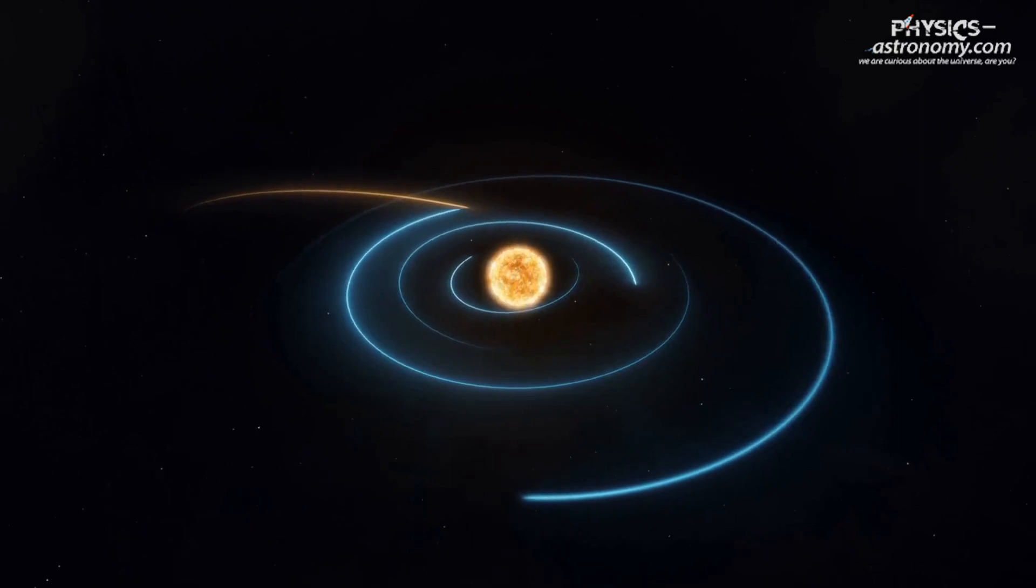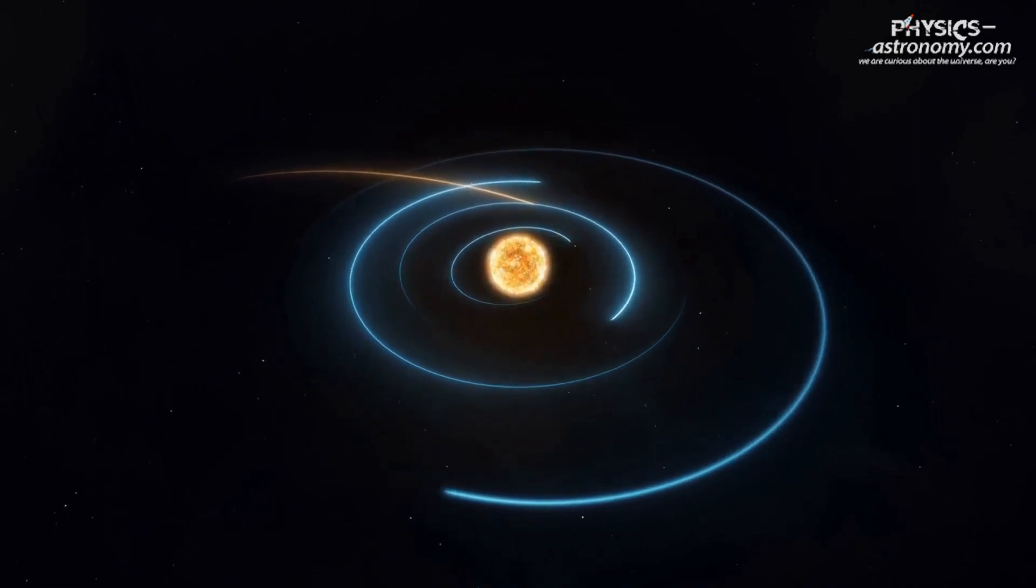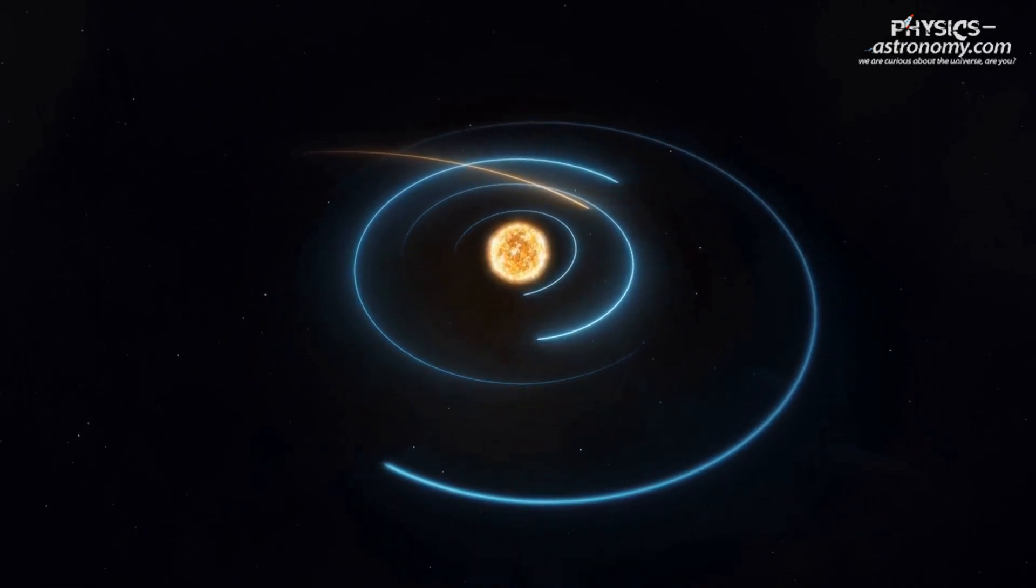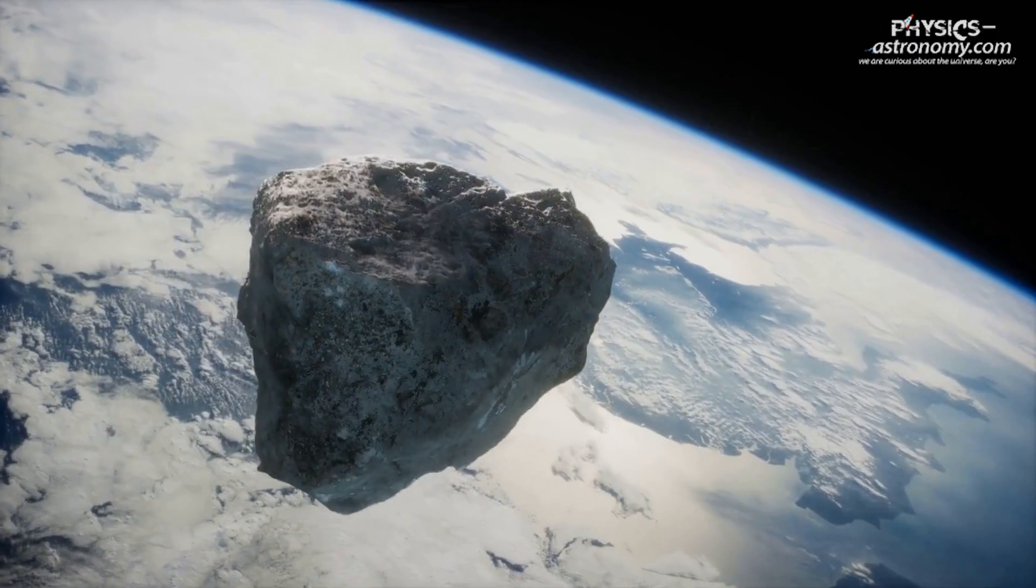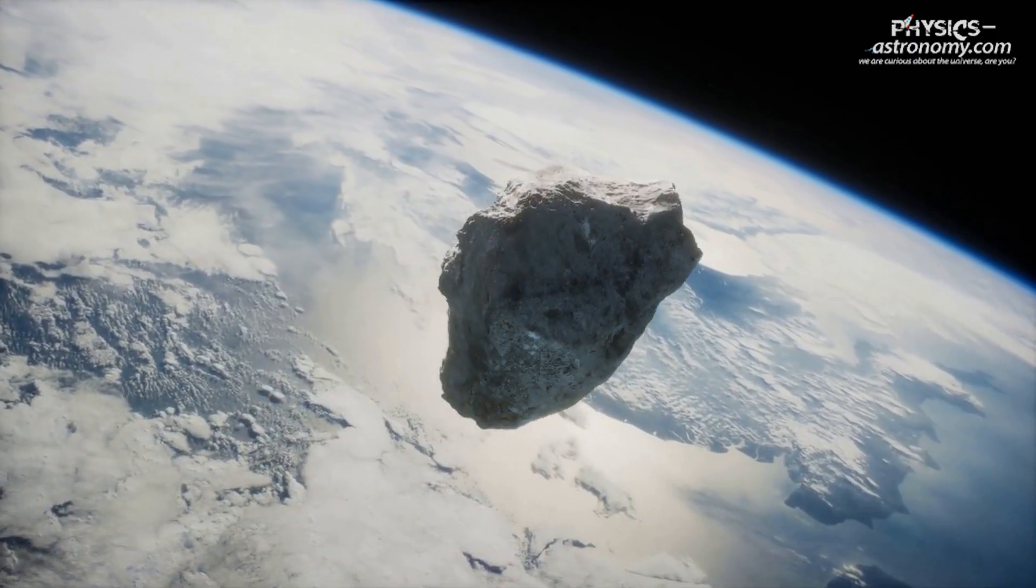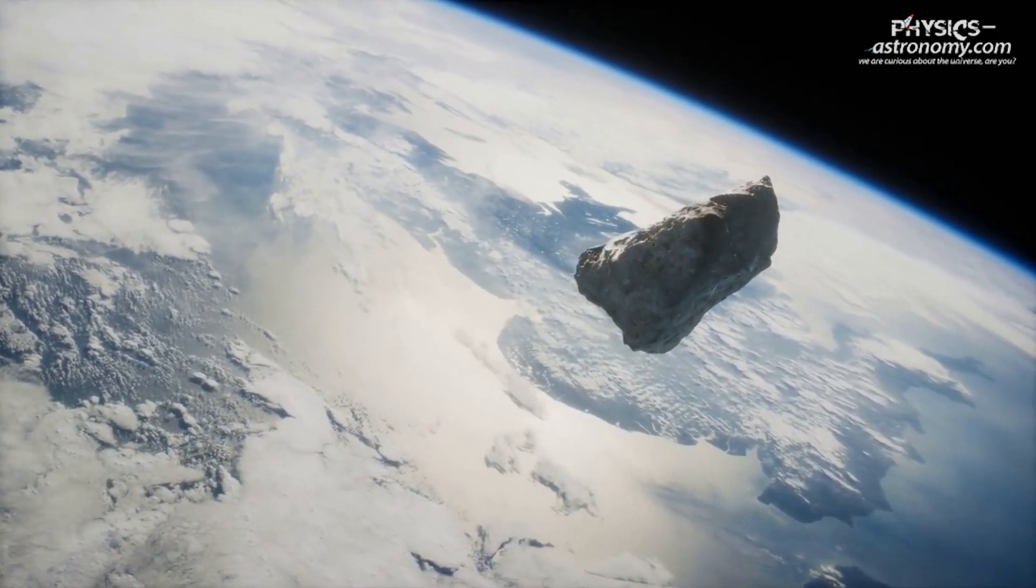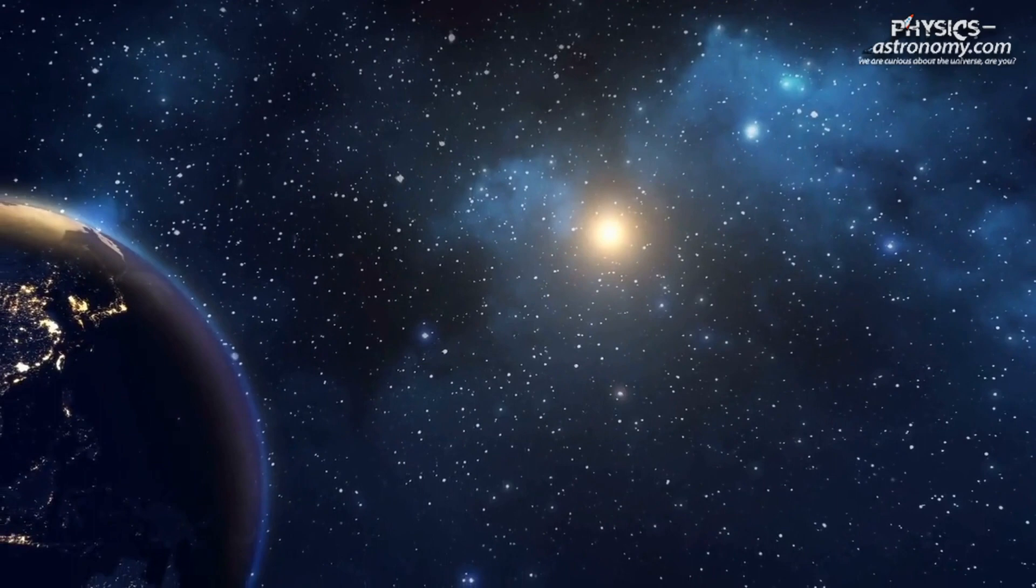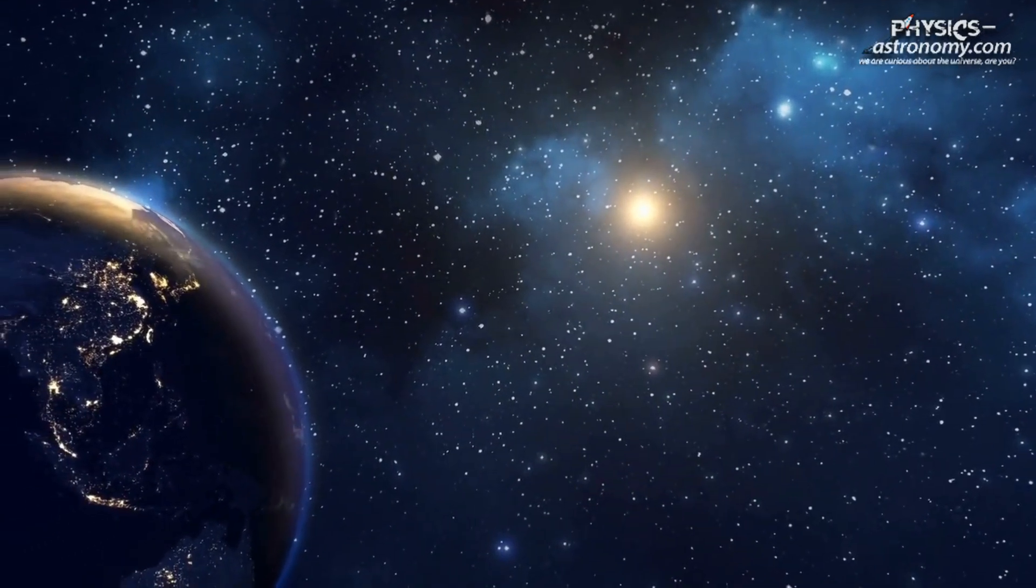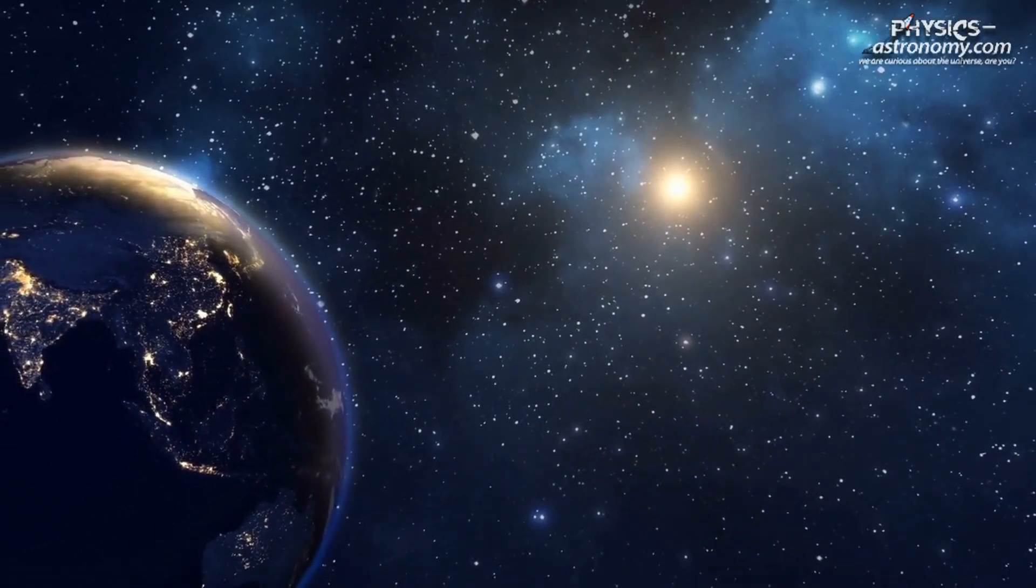The most intriguing aspect of 3753 Cruthni is its unusual orbital relationship with Earth. Instead of orbiting Earth directly like the Moon, Cruthni follows a complex horseshoe-shaped path around our planet. It takes approximately 770 years to complete one cycle of its horseshoe-shaped orbit.